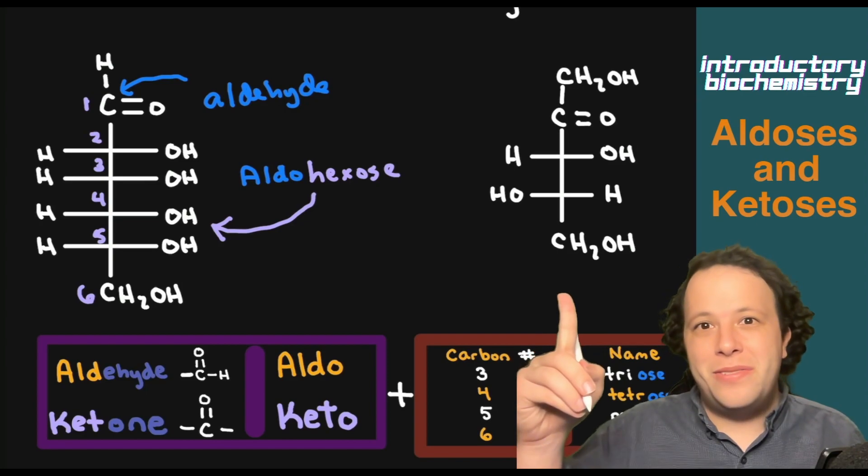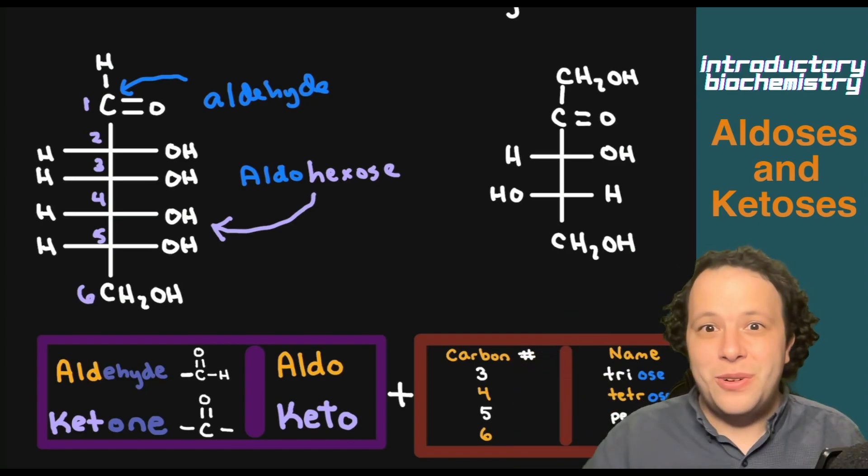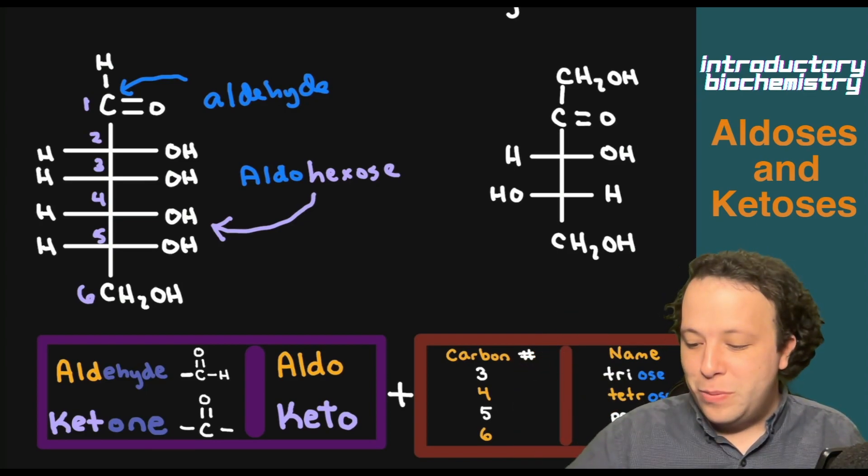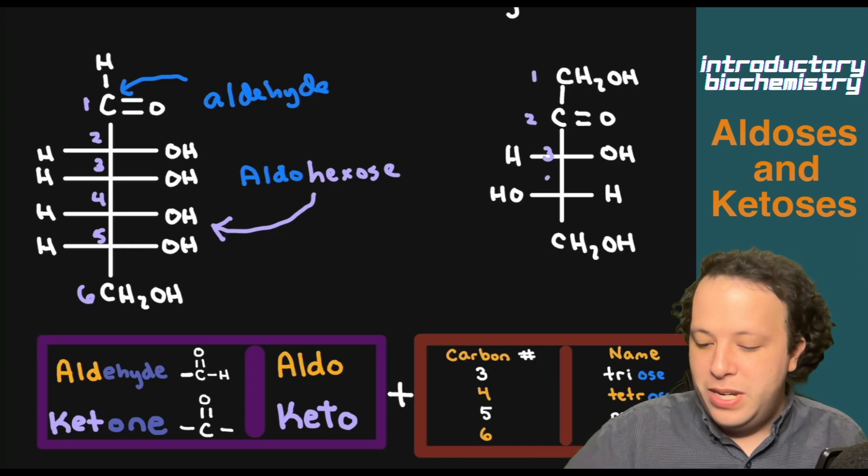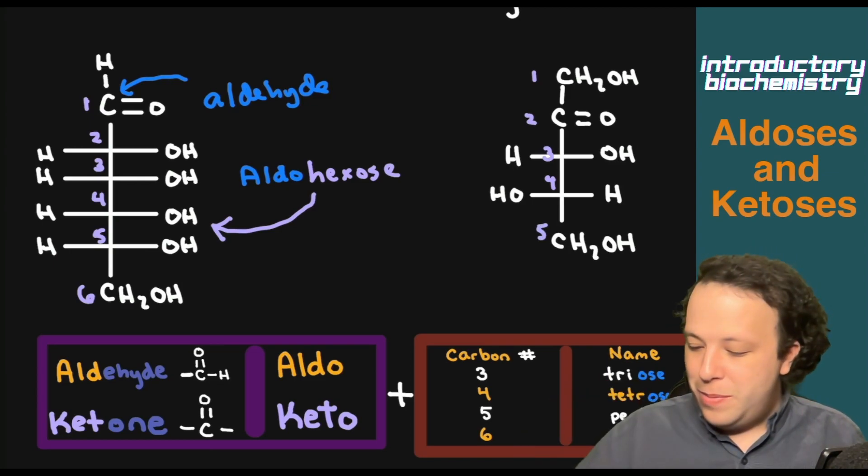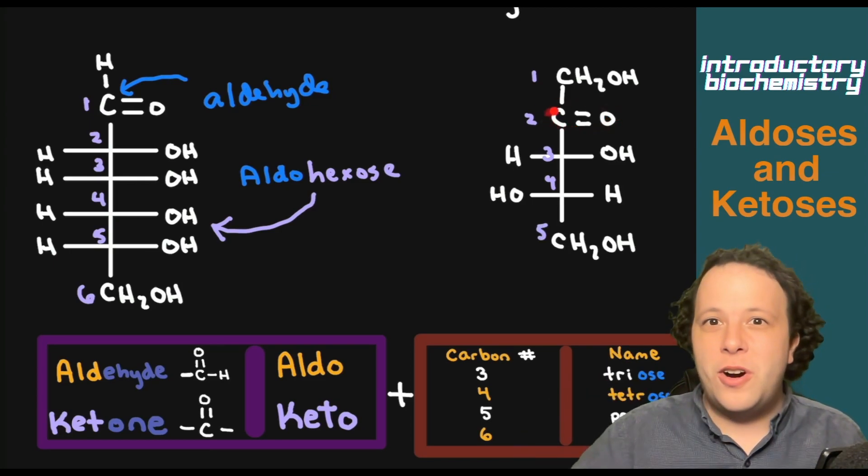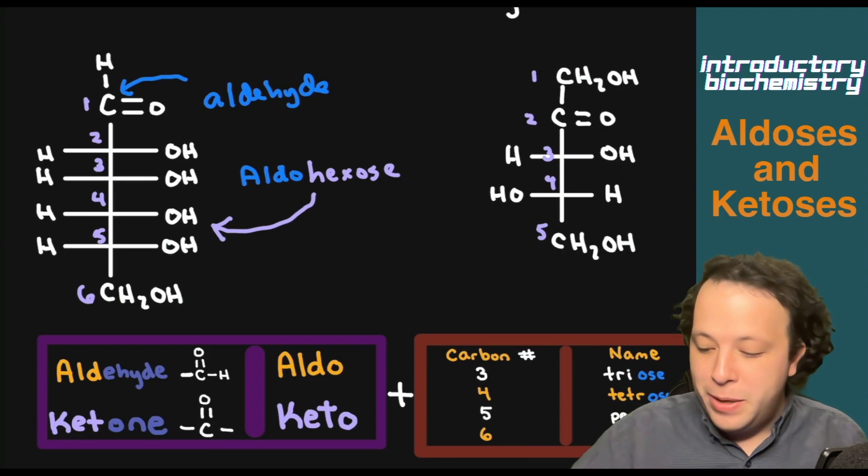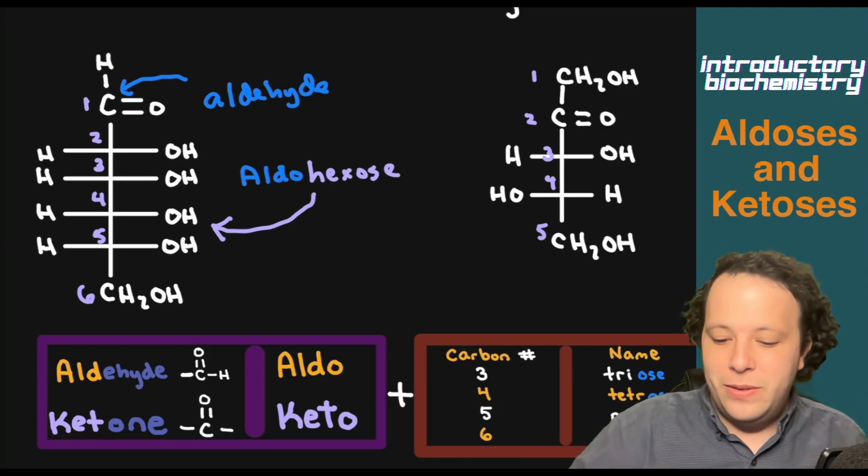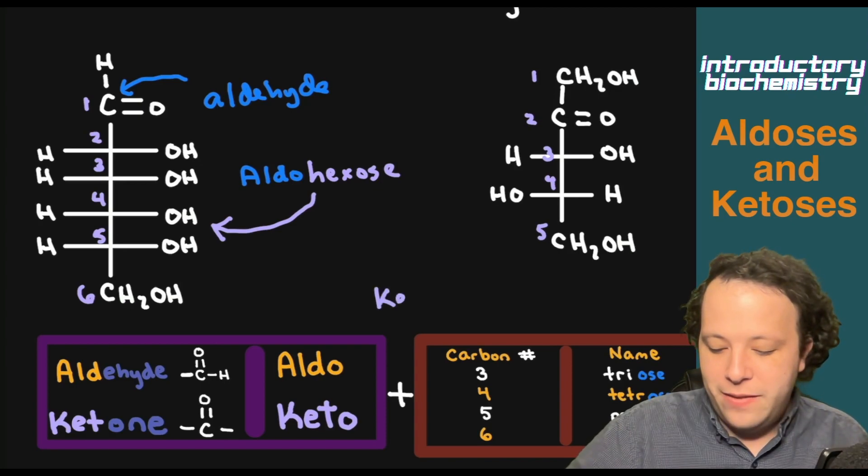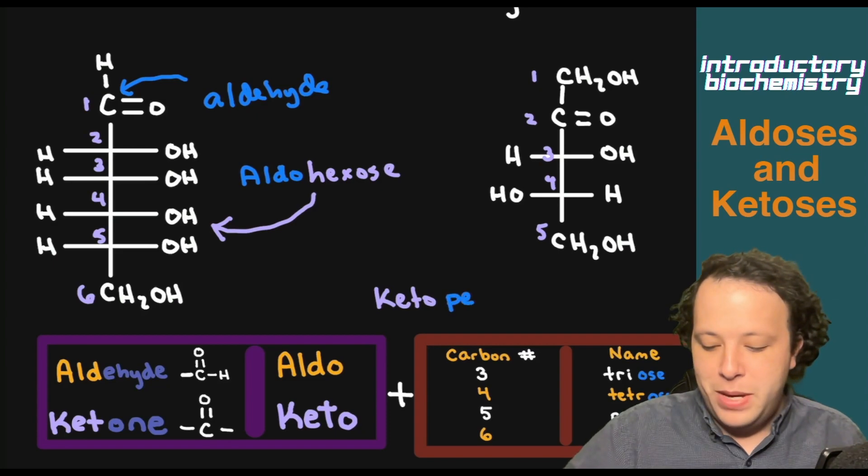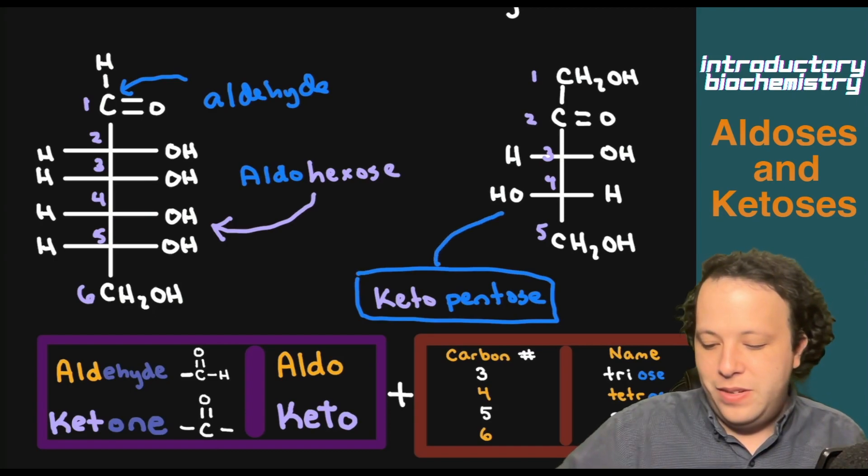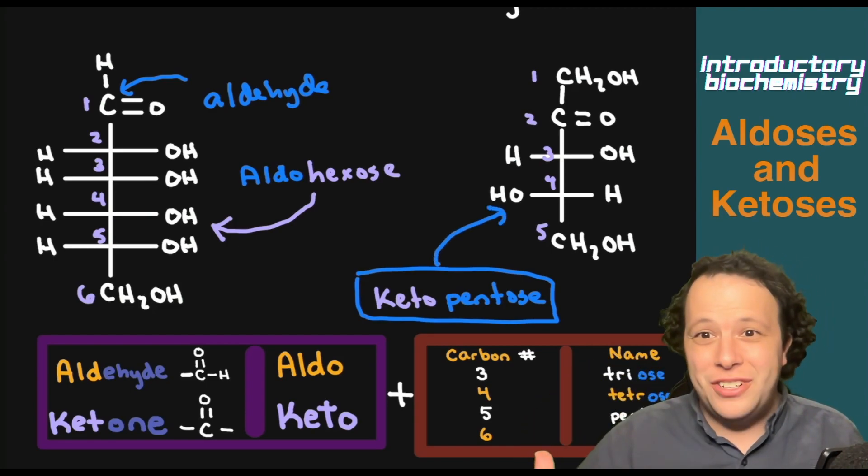Now, what about the structure above? Well, same idea. We got to first identify what the functional group is. And when we go through numbering here, one, two, three, four, five, we can see that on carbon number two, we have our carbonyl, so our C double bond O. So what that means is when we have that there, we have a keto, and being that there's five carbons, that's going to be ketopentose, is going to be the classification for that structure.